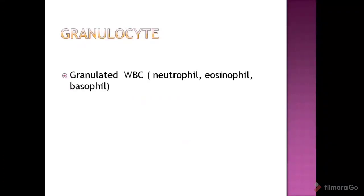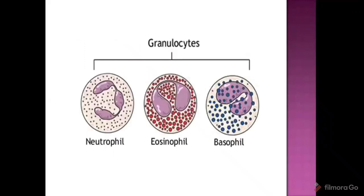A granulocyte is a granulated white blood cell. Granulated white blood cells can form a neutrophil, eosinophil, and basophil. That is granulocyte.